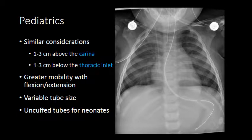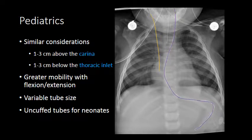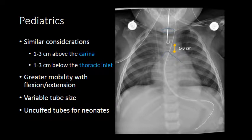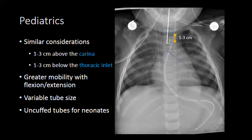In pediatric patients, the appearance of the endotracheal tube should be similar to that in adults, but the sizes are smaller and the carina is often located higher. Our endotracheal tube has a similar appearance — we have an IJ catheter, a feeding catheter, and a thick white line demarcating the endotracheal catheter. In this case, the tip of the catheter is approximately 1 to 3 centimeters from the carina and 1 to 3 centimeters from the thoracic inlet, and is appropriately positioned. Note that the tip has more variability with flexion and extension in pediatric patients, tube sizes vary with age, and in neonatal patients there is no cuff on the endotracheal catheter.